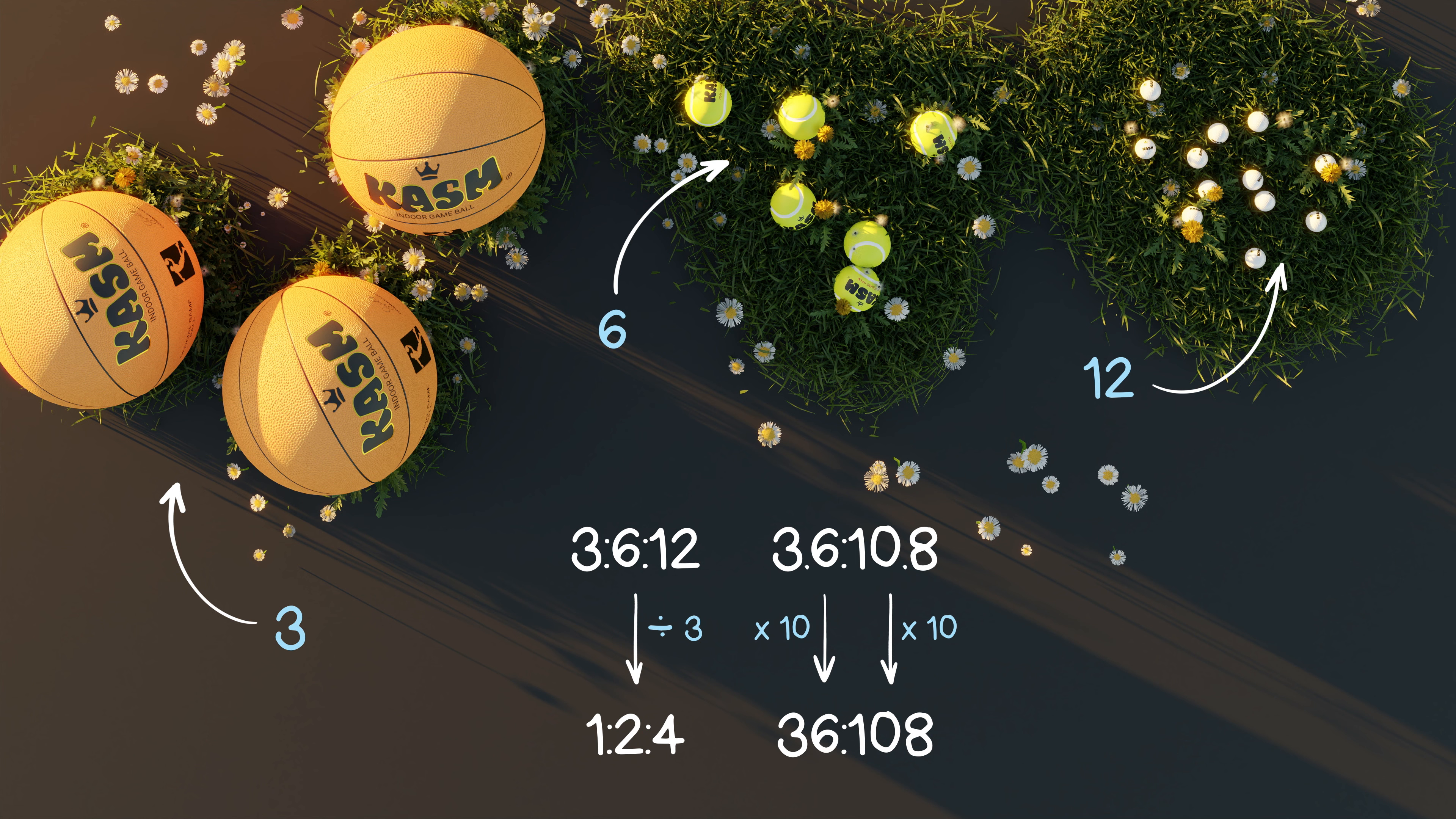12 and 18 are both factors of 36 and 108, but the highest common factor is 36. By using 36 and dividing both sides of our ratio, we can now find our simplest form. And if you had used 12 or 18 instead, with a few more steps, you would still have been able to simplify your ratio.